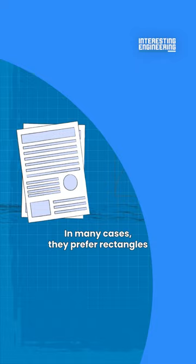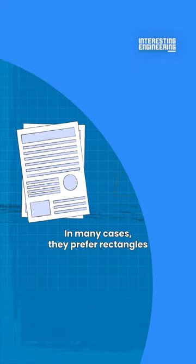In many cases, they preferred rectangles that are in the range of 1.414 and 1.732. If you see the Golden Ratio in your favorite designs, it's your brain playing games.